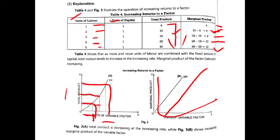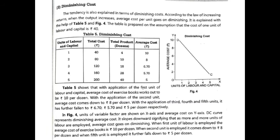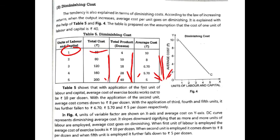Next, increasing return to a factor leads to diminishing cost. The total cost remains the same because the fixed factor and labor cost are fixed, but the product is increasing at an increasing rate. So per unit cost will decrease. When you divide the total cost by total product to get average cost, the average cost decreases — meaning increasing return to a factor corresponds to diminishing cost.